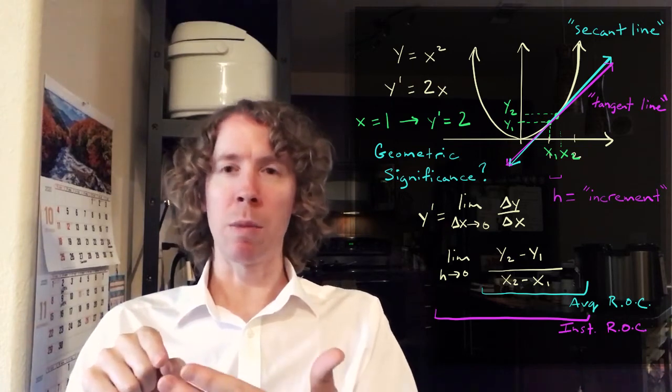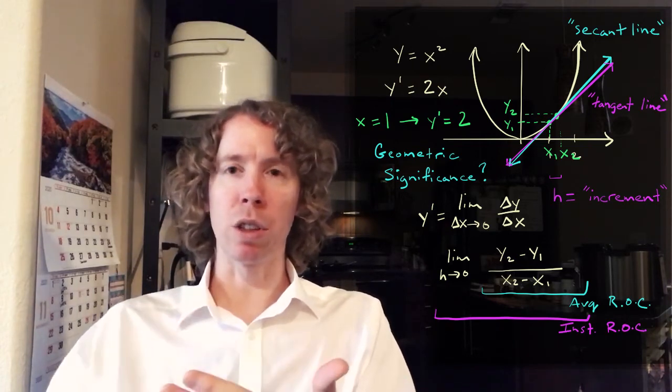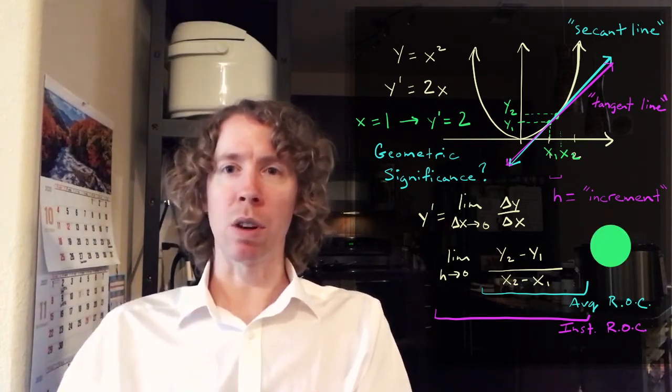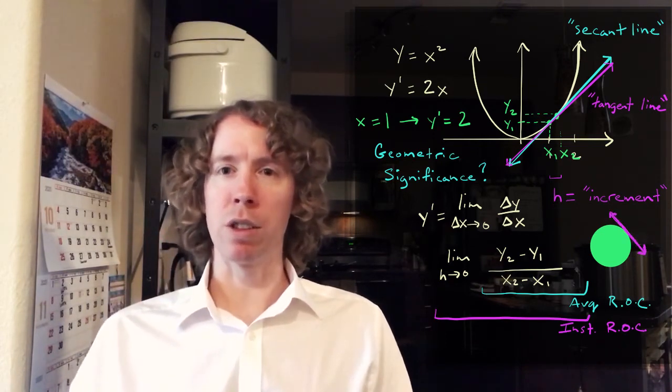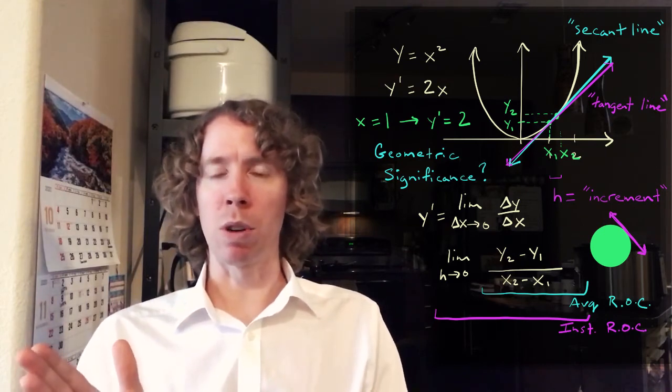If you remember in the terminology for lines that are touching a circle, a line that touches a circle in just one place, just on the edge and doesn't cross through it, that's called a tangent line. That's the terminology we're going to use here.